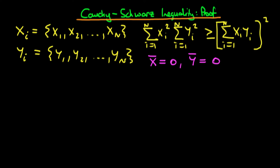To do this, we divide this sum of xi squared through by n. Now this first expression looks like the sample variance of xi. Then if we do the same thing to the yi term, dividing that through by n, this second expression on the left-hand side actually looks like the sample variance of y. Because we've multiplied through by 1 over n on both sides, we need to do exactly the same thing to the right-hand side — dividing through by n squared. We can do that by putting it inside the parenthesis, since when I square out the parenthesis I get a 1 over n squared. And now this term inside the parenthesis looks like the sample covariance between x and y.